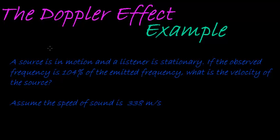A source is in motion. So in other words, the velocity of the source we have. The velocity of the listener is equal to zero. He's stationary. If the observed frequency is 104% of the emitted frequency, what is the velocity of the source?